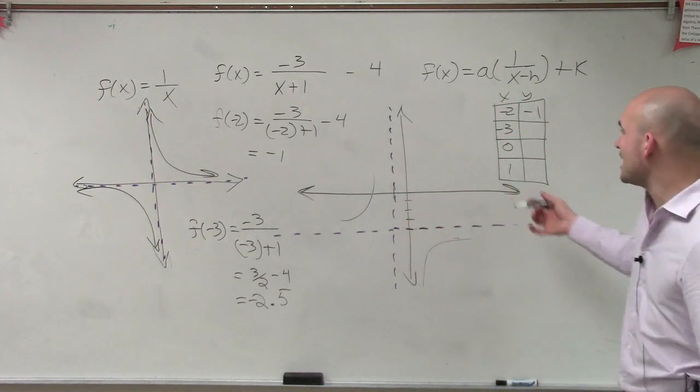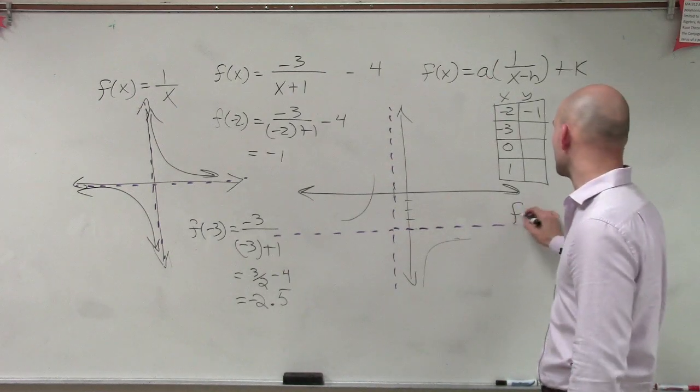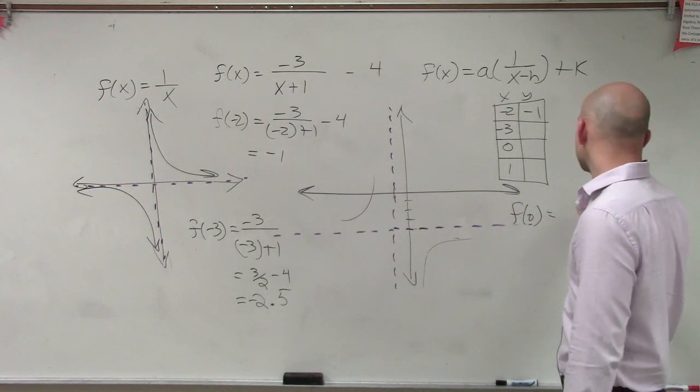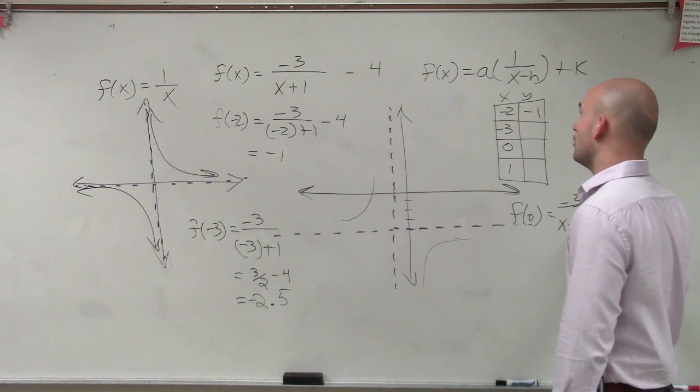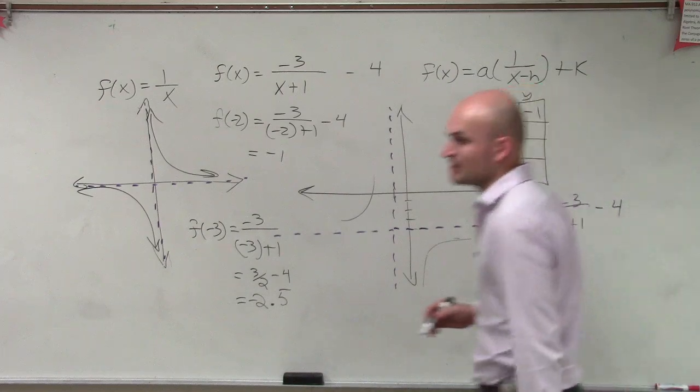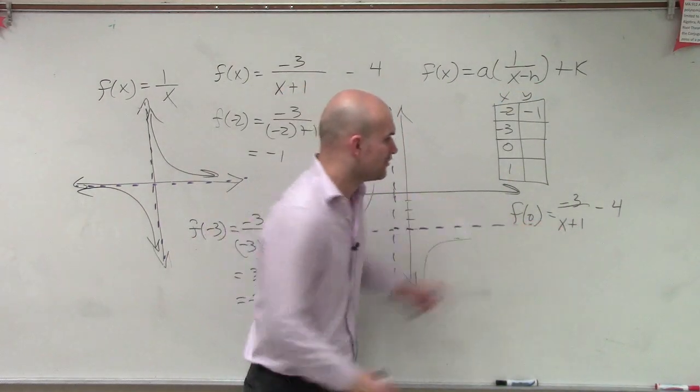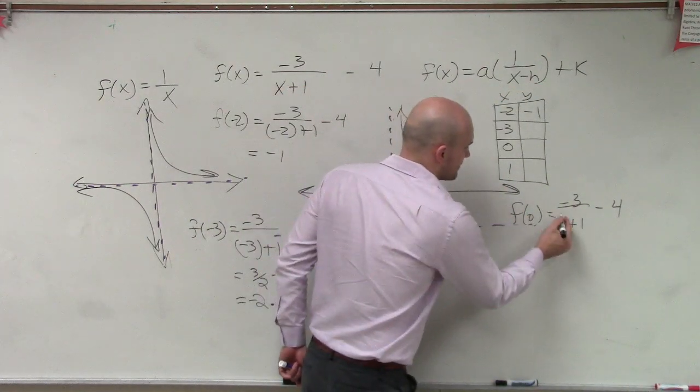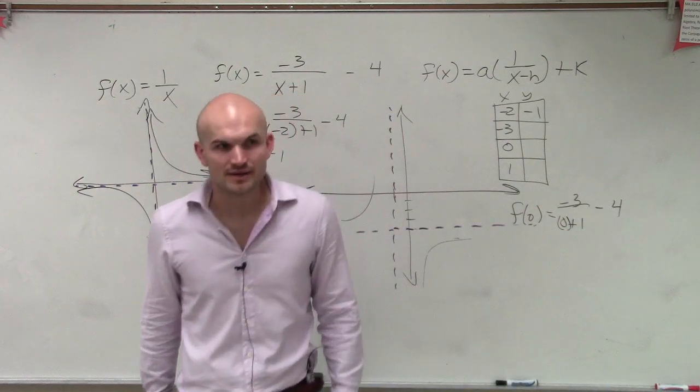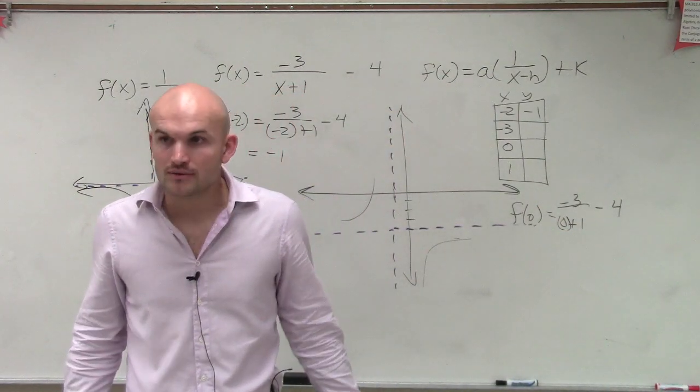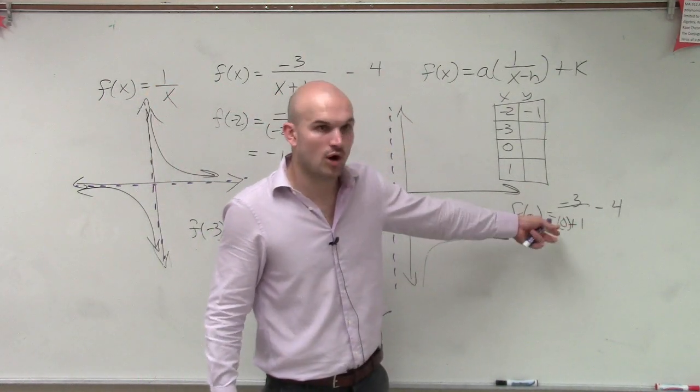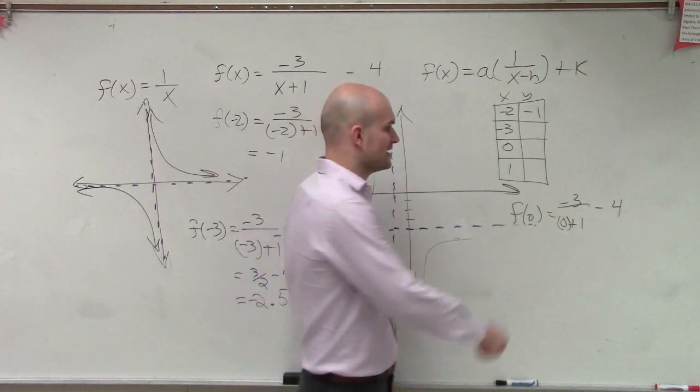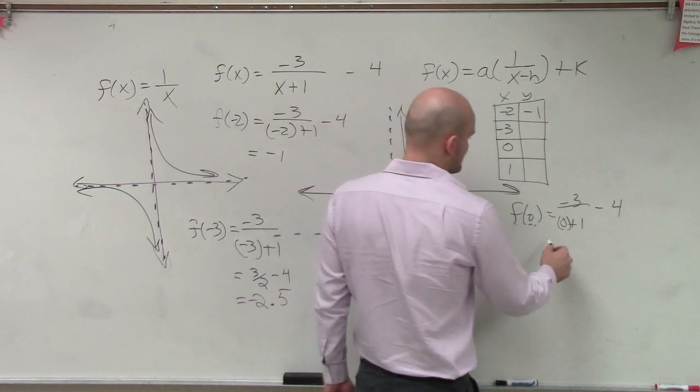Now, let's go and look at f of 0. Now, some of you might say, well, Mr. McLogan, you said x cannot equal 0. And that's true when we had our parent graph or when we have a function where 0 cannot be on the bottom. But if I plug in 0 for my x, do I have 0 as the denominator? No. I don't have 0 as the denominator. Because 0 plus 1 is 1. Negative 3 divided by 1 is negative 3. Negative 3 minus 4 is negative 7.